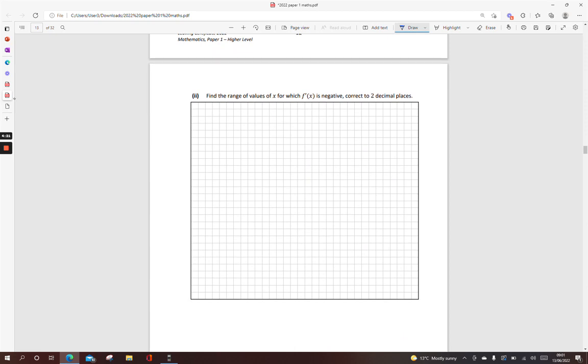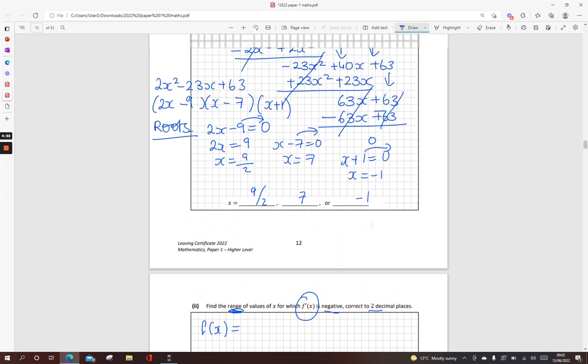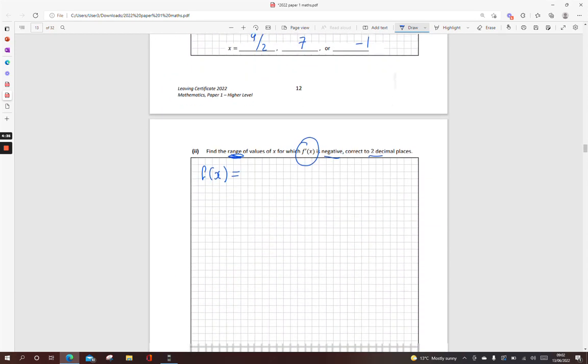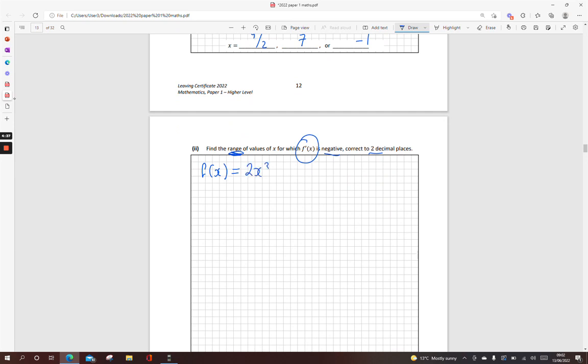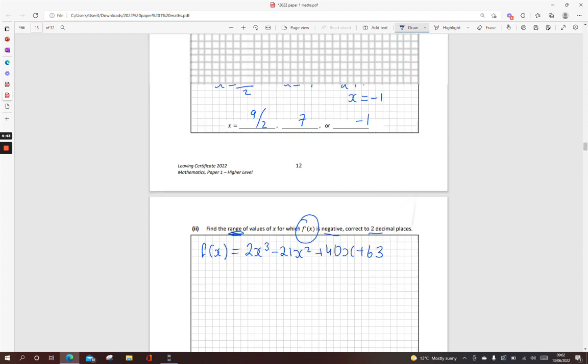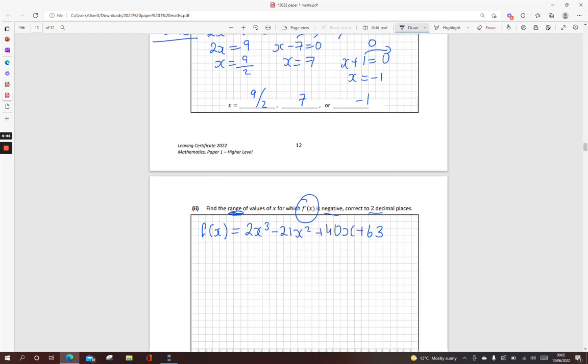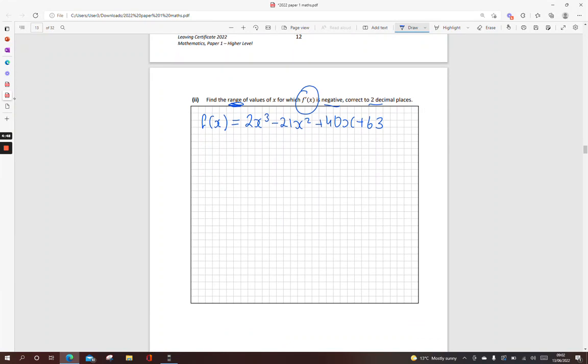Next one, find the range of values for which f dash x, the derivative, is negative, correct to two decimal places. So the original function, f(x) is 2x cubed minus 21x squared plus 40x. That's my original function. I'm going to diff it here. Multiply down by the power, reduce it by 1. So 3 times 2 is 6x squared, 2 times 21 is 42x, plus 40. So that's the diff.